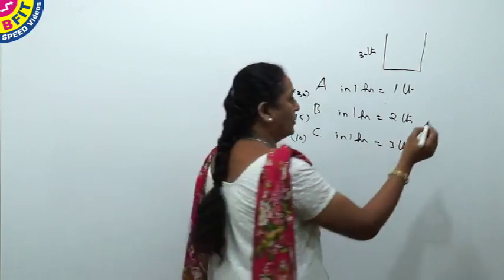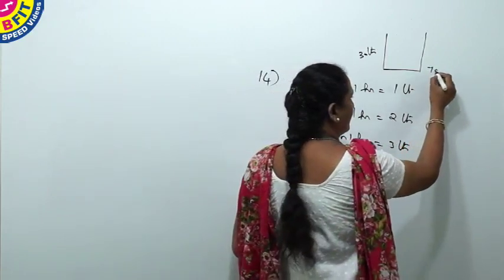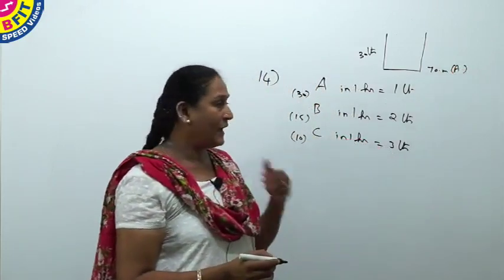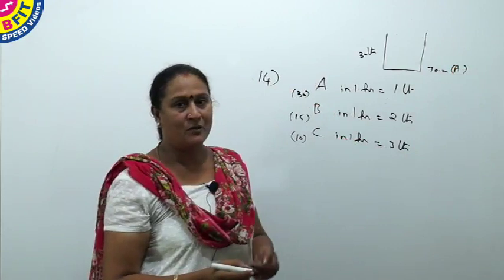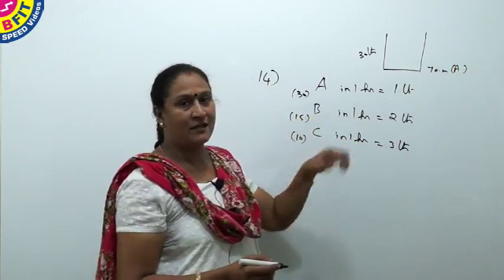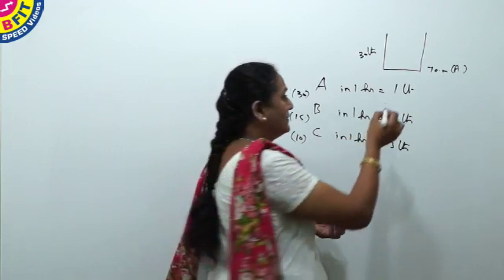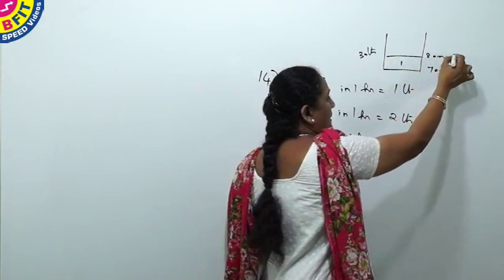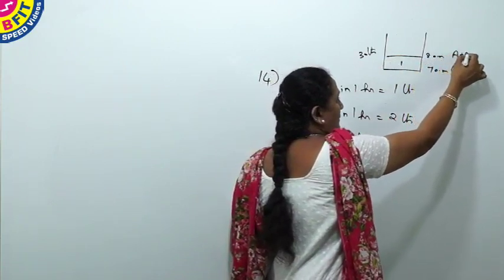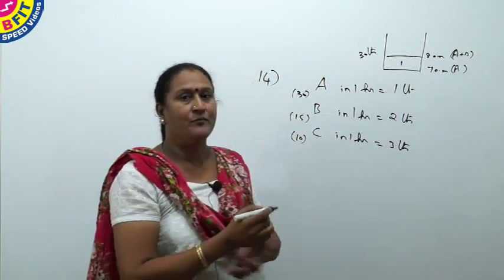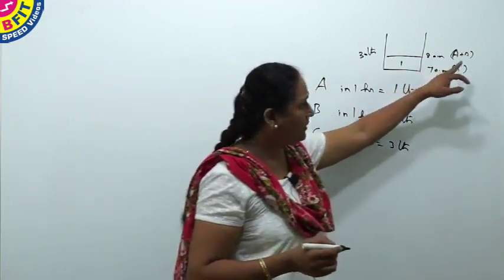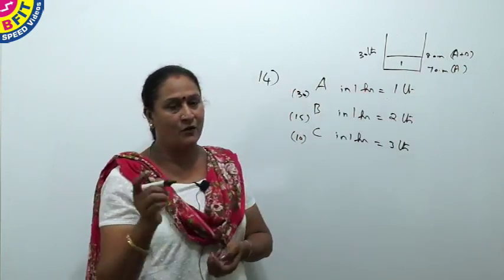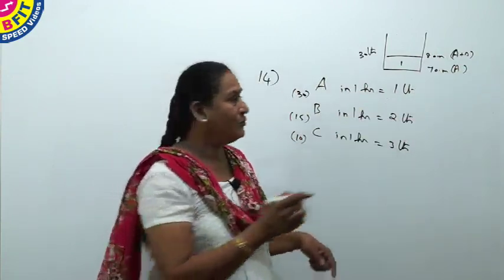First A is open at 7 a.m. At 8 o'clock, after 1 hour, B is open. By this time, how many liters A can pour in the tank? Only 1 liter. At 8 a.m., B is open together with A. When A and B are open, how many liters will be there for 1 hour? 1 plus 2, 3 liters.